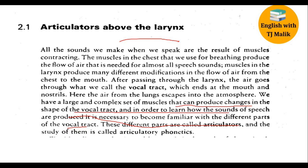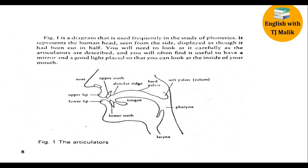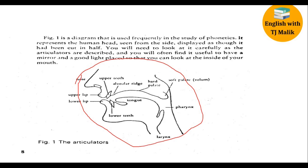These different parts are called the articulators, and the study of them is called articulatory phonetics. So first we have an overview of the mouth. We have upper teeth, then we have the alveolar ridge, then the hard palate, and then we have the soft palate, which is also called the velum.